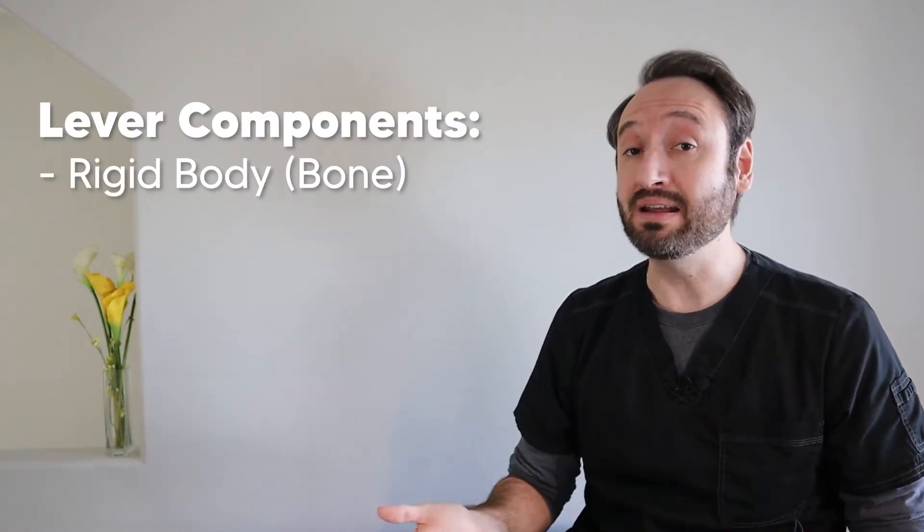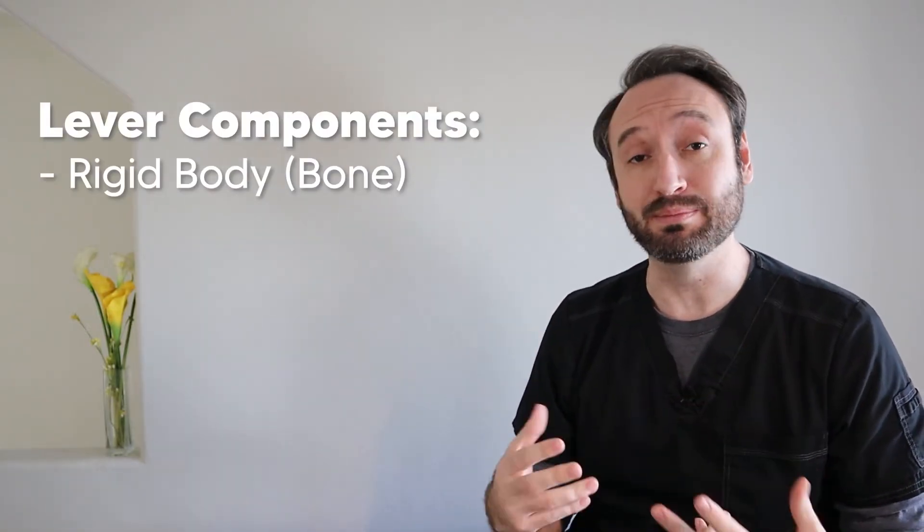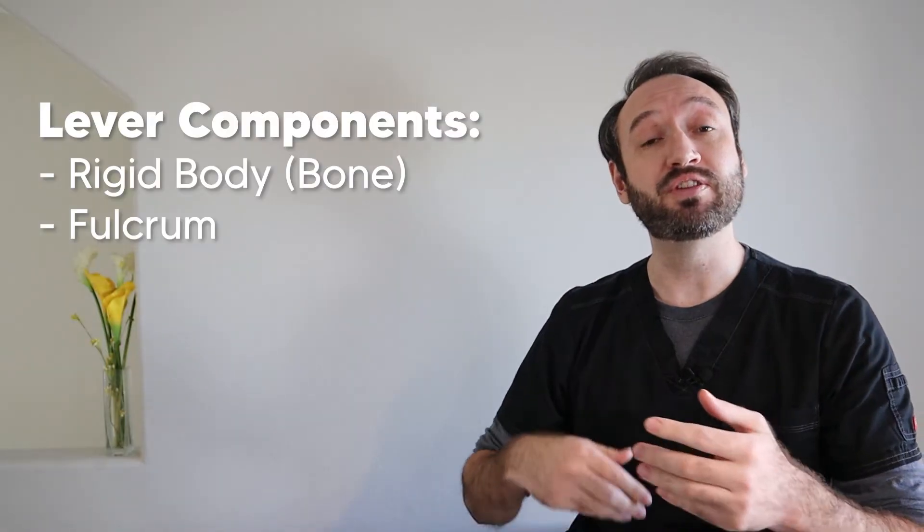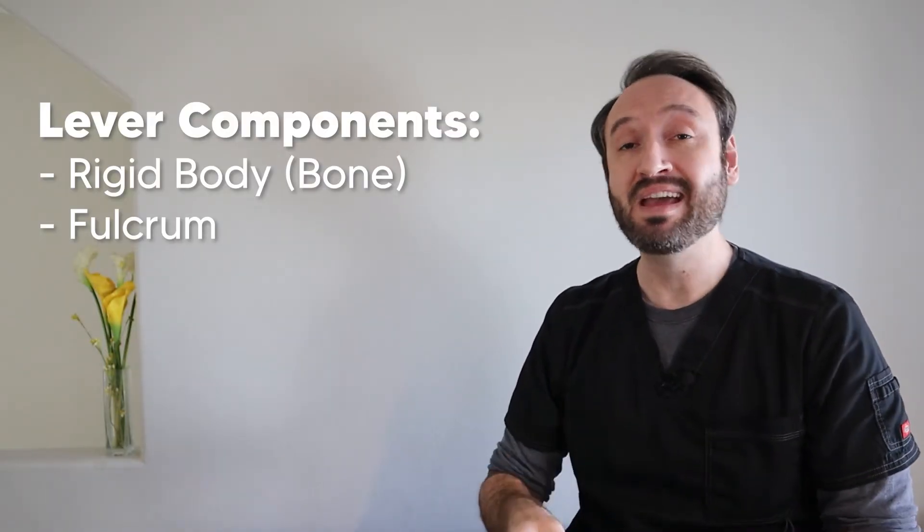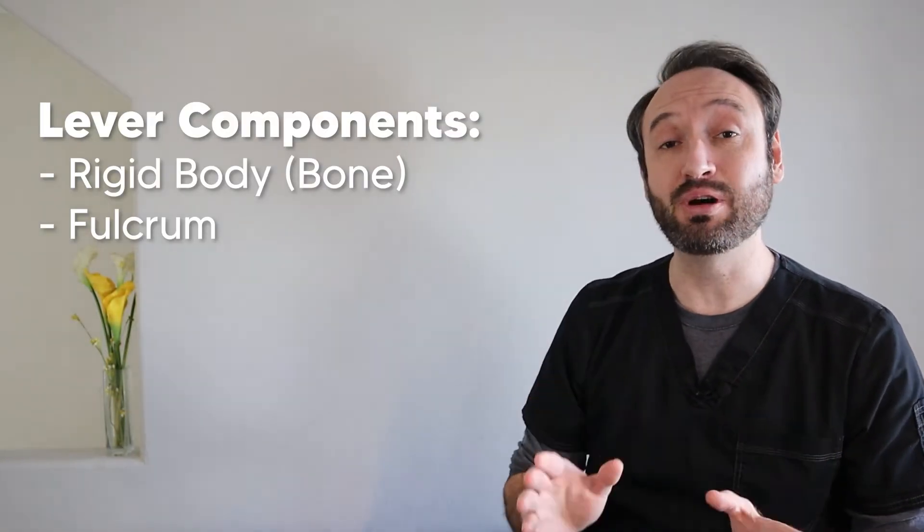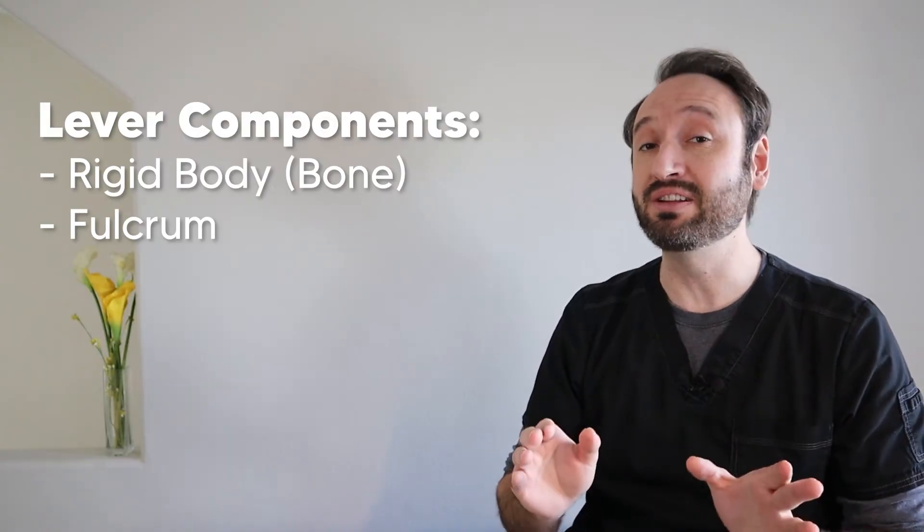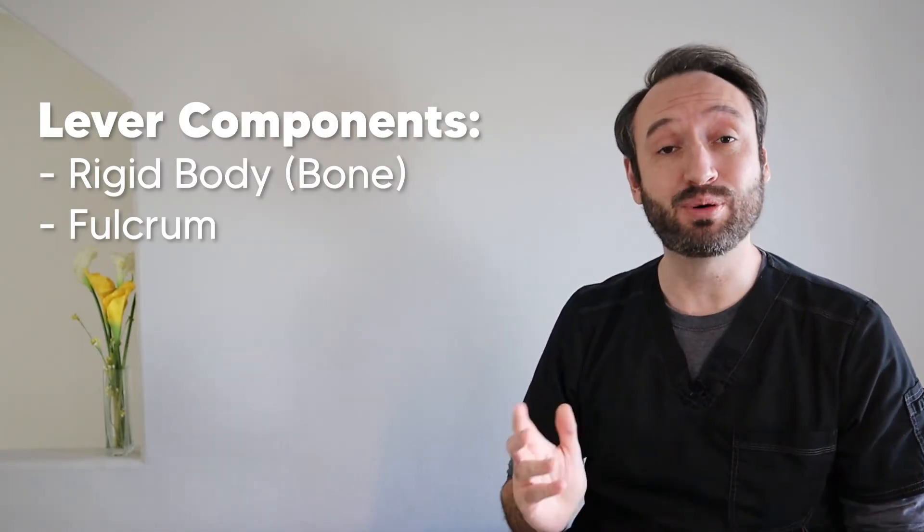These components include a rigid body, which is basically just the bone that's being moved, a fulcrum, which is the fixed point the bone is rotating around. This is usually, but not always, a joint, so just be careful not to assume it's a joint, or that's when they'll trick you and you'll lose points.